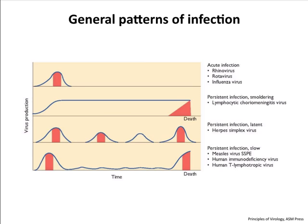This pattern is characteristic of HIV infection, which we'll talk about later. A student asked whether in latent infection the virus is just not detectable. The answer is that the genome is there but no infectious virus is made — it's not a matter of detection. Some herpes viruses simply don't make virus for long periods of time.